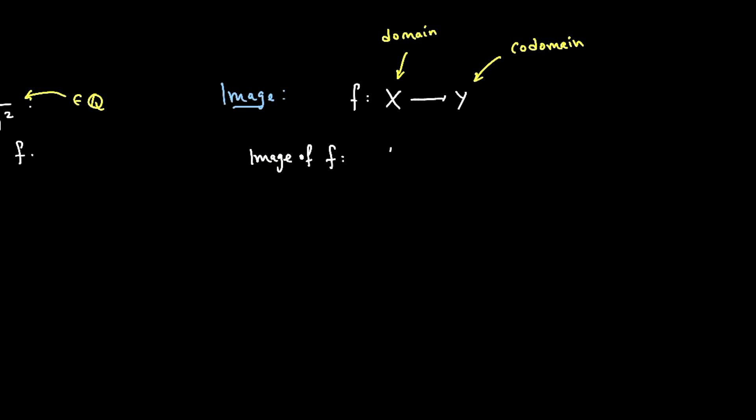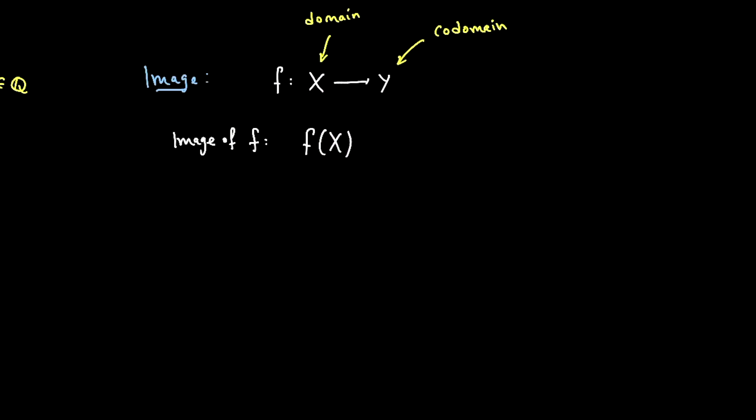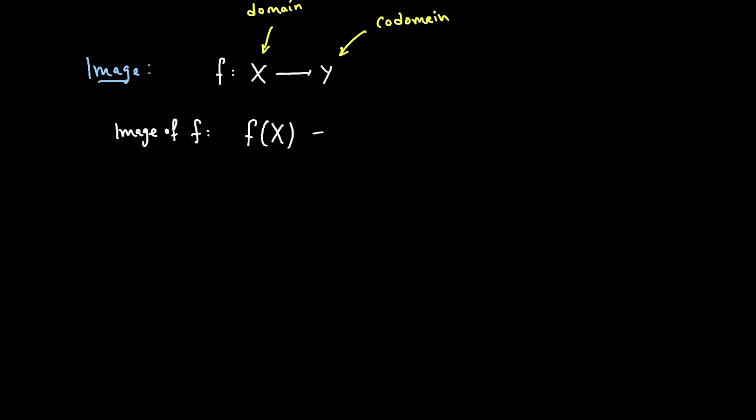Then the image of f, some people use this notation f of capital X, meaning like you plug in the domain capital X into f. So it's like plugging in the entire set of inputs gives you the entire set of possible outputs. So this is the set, the image of f is the set of possible outputs.